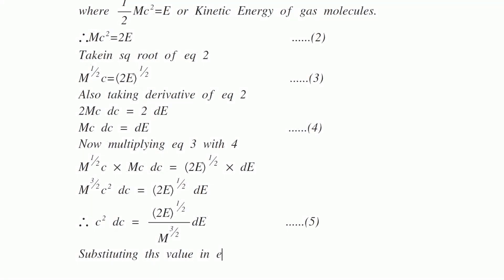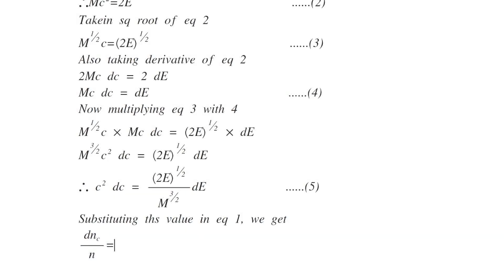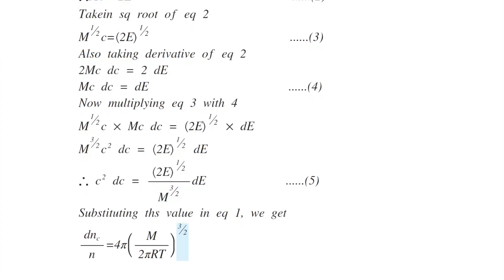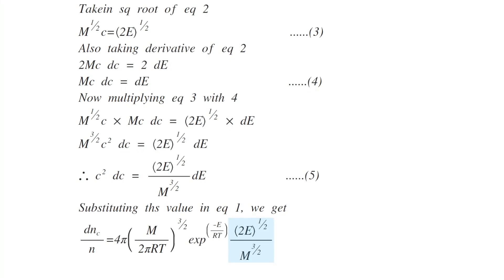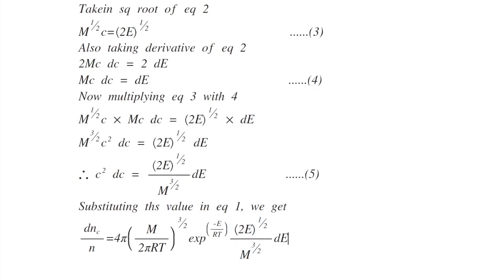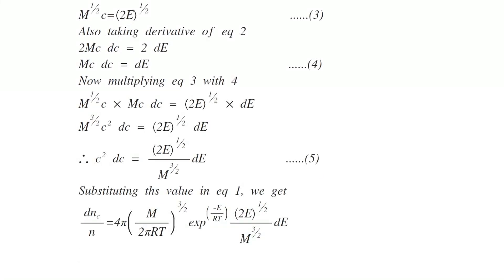Now we can substitute this equation in equation number 1 for c square dc. So the equation becomes dNc by n equals 4 pi m by 2 pi RT power to 3 by 2, exponentially minus E by RT. Now we can replace c square dc with 2E raised to power half divided by m 3 by 2 dE.